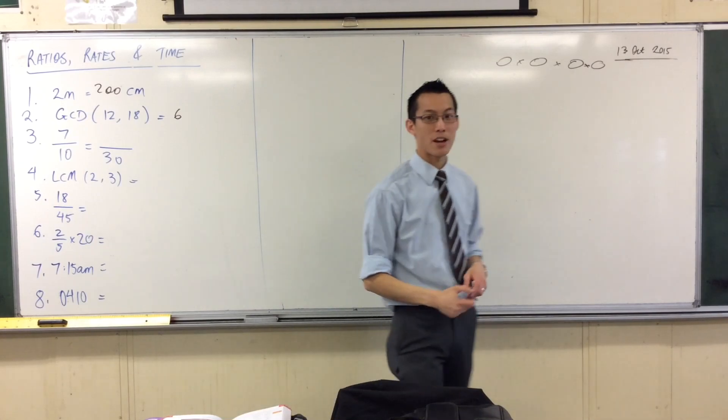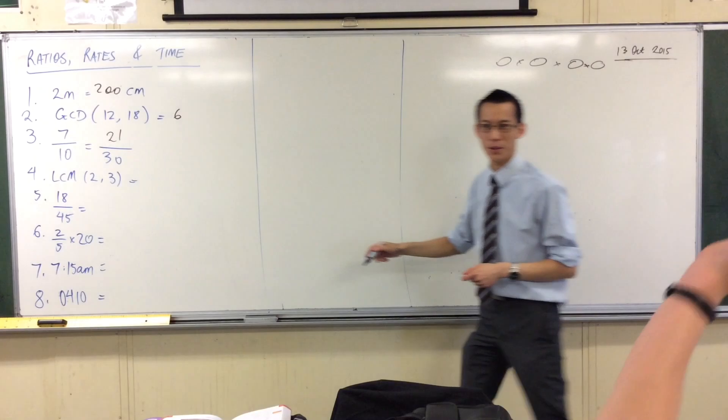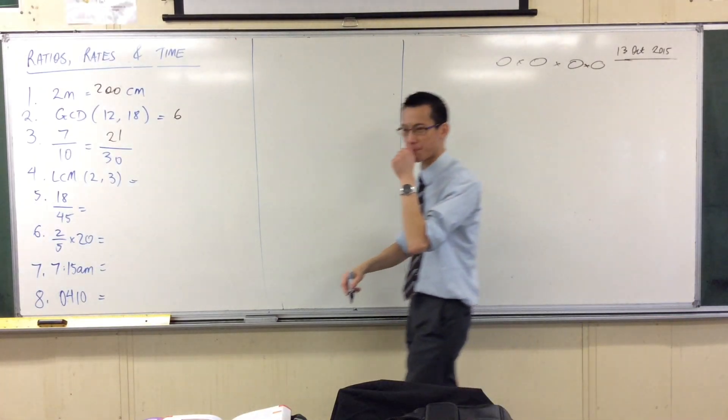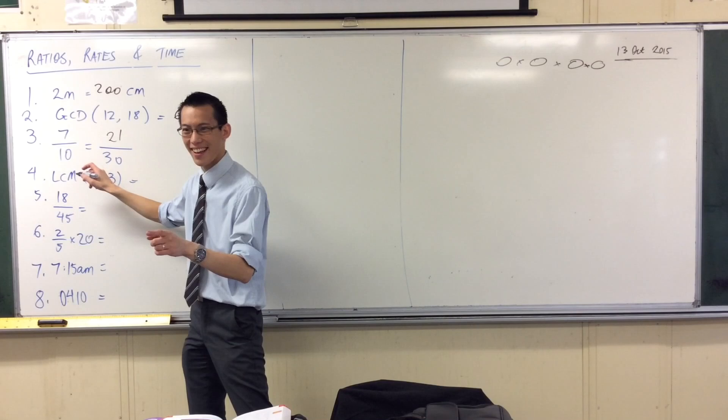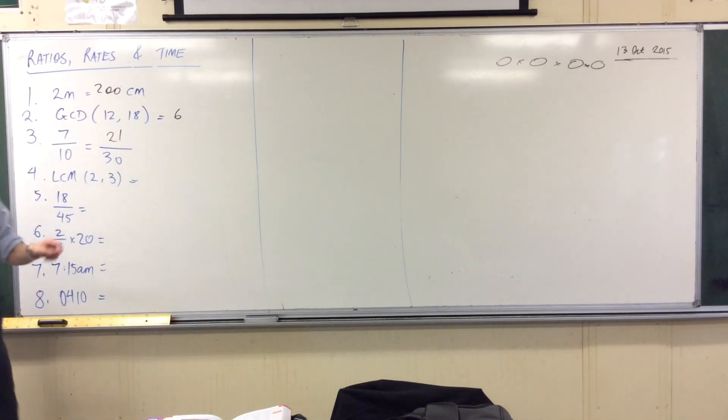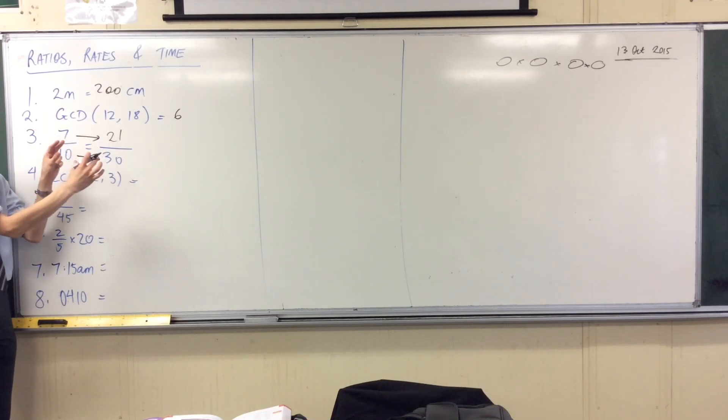7 over 10, what's our equivalent fraction? 21 over 30, and how do we get that? How do we go across, Danielle? Times by 3. Yeah, good. So the whole idea of equivalent fractions is, if you do the same thing to the denominator as the numerator, the fractions will stay the same. So long as you're multiplying or dividing, right?